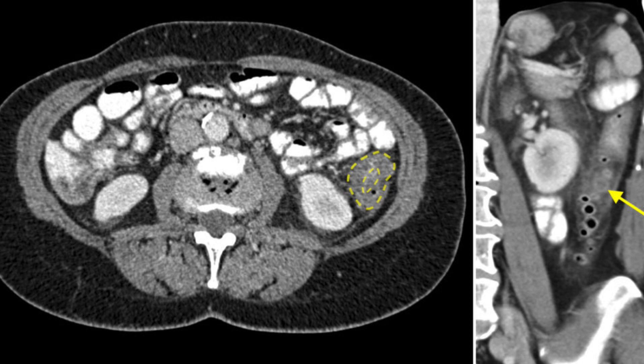For diet: with acute diverticulitis you put them on a low-fiber diet, but with diverticulosis you want a high-fiber diet. Diverticulitis can occur anywhere along the colon but is most commonly found in the sigmoid colon. If you do have a cecal diverticulum, it's more likely caused by a congenital diverticulum.